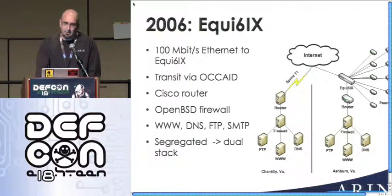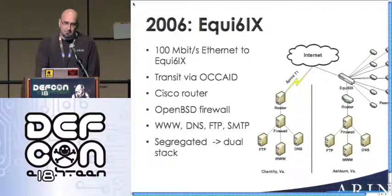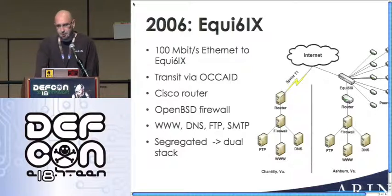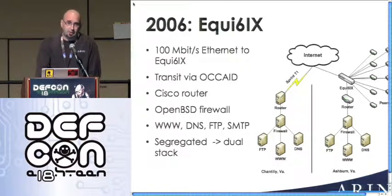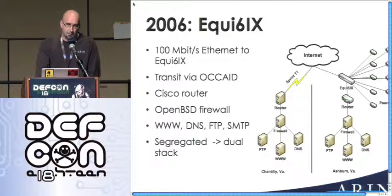By having a quad-A for www.arin.net, we were able to make service better for a lot of people and really educate them — the first time our department got involved with helping customers troubleshoot their network. This is also the first time we started to play with dual stack. Because we had a 100 megabit Ethernet connection into the V6 internet, we wanted to get away from the segregated network. We started dual stack very slowly, and by end of 2007 we had V6 across our entire backbone. In 2008, we rolled V6 to our client network — Windows XP hosts, Linux boxes, and Macs.